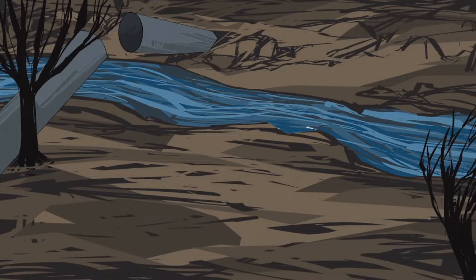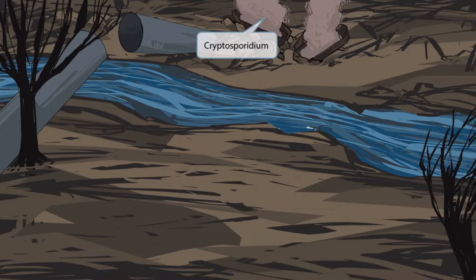This story takes place after a violent earthquake. You can see the quake has broken a city's water pipe, and a new river has developed below from the leaking pipe. The earthquake also unearthed some coffins, or crypts, which are releasing spores into the atmosphere. These crypts releasing spores stands for cryptosporidium.